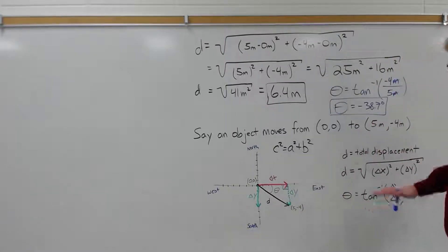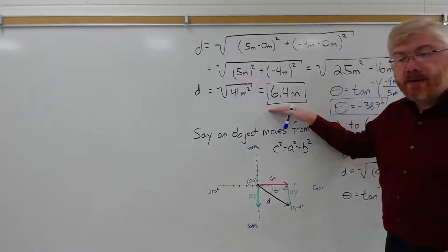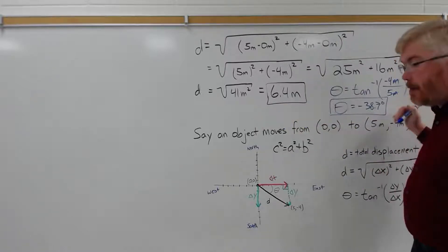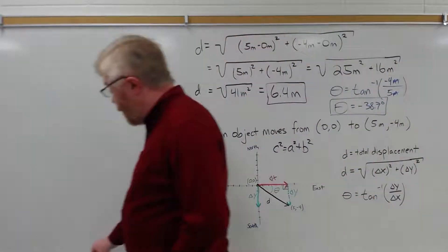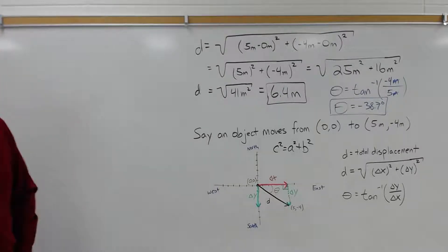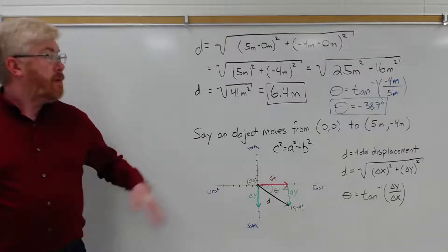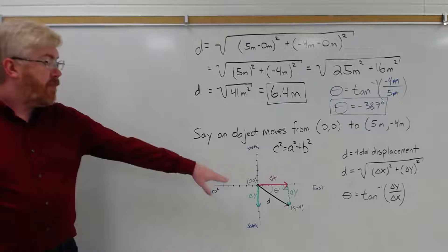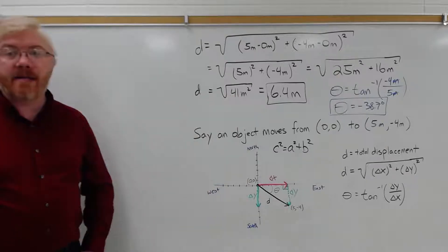So minus 38.7 degrees means it's 38 degrees below the x-axis. So, with this length, 6.4 meters, and this angle, I've given you the displacement vector from that motion in the x and y direction.